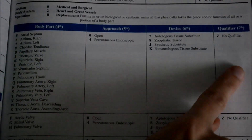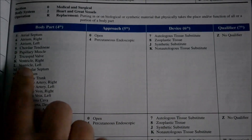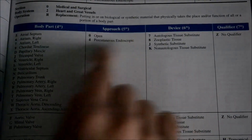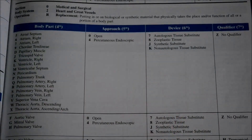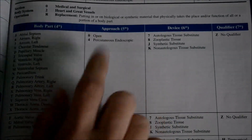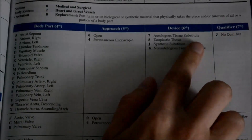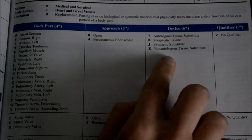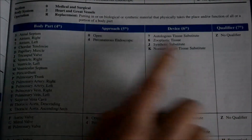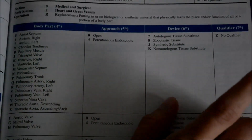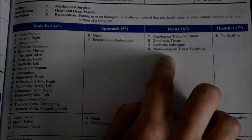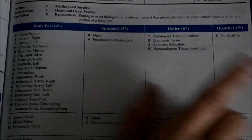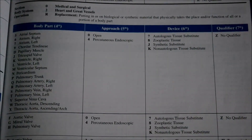For example, selecting Ventricle Left puts us in our first row. The fifth character placement is the approach — how they got to that body part — and it lists which approaches are available, such as open or percutaneous endoscopic. The sixth character is the device column, listing all the different devices commonly used for this root operation and body part. The seventh character is the qualifier, which usually gives information on the device or other details that need to be captured for this type of procedure.